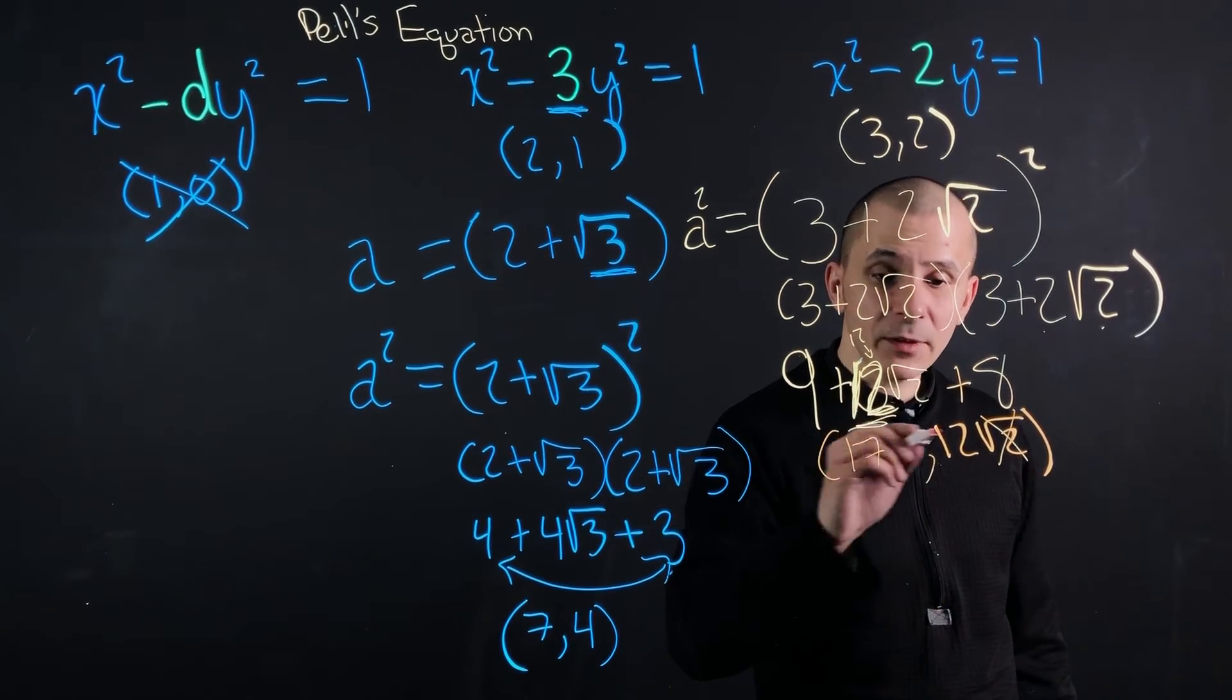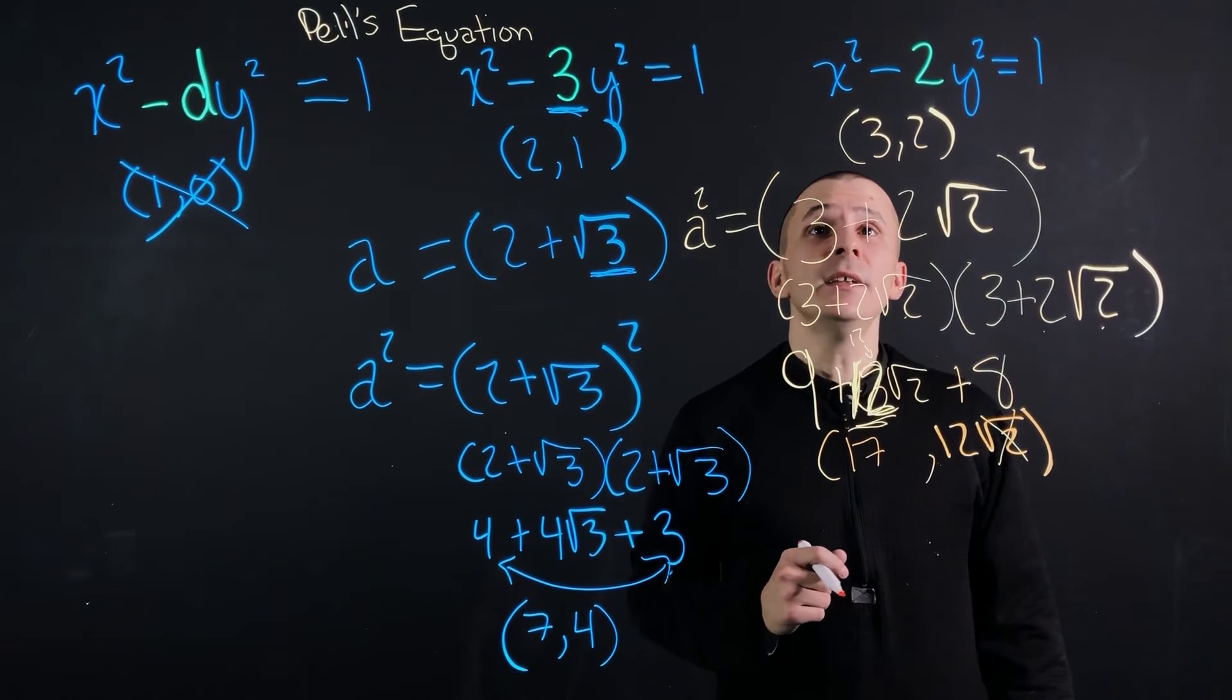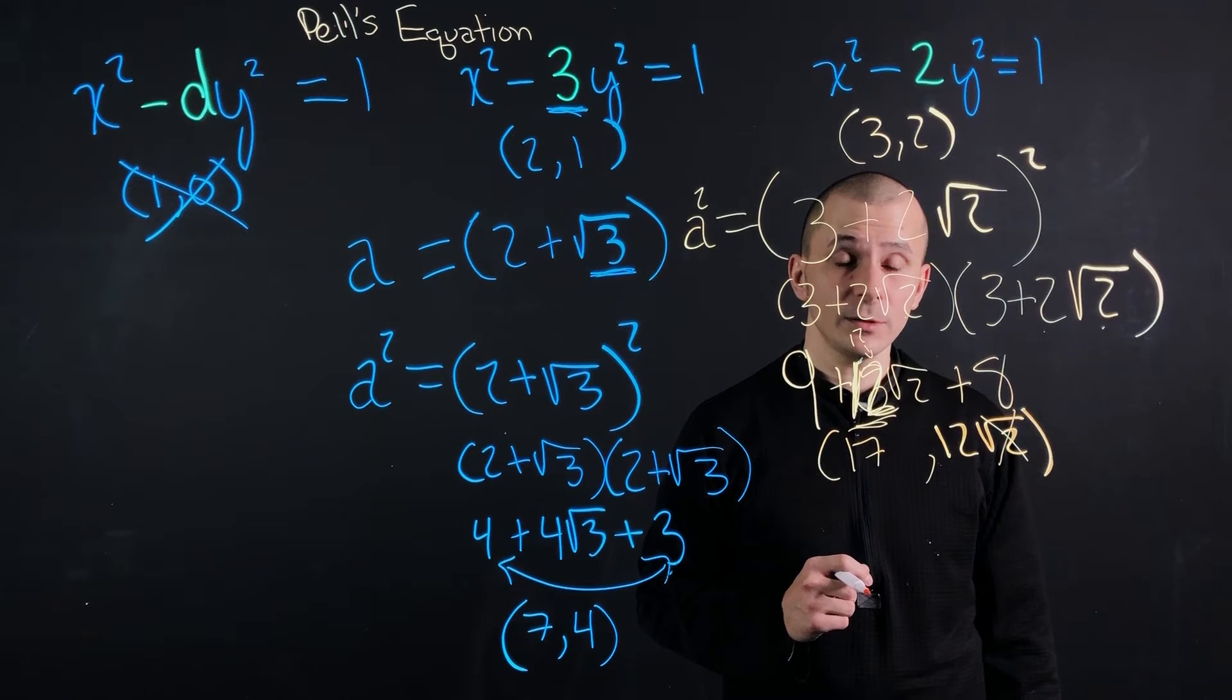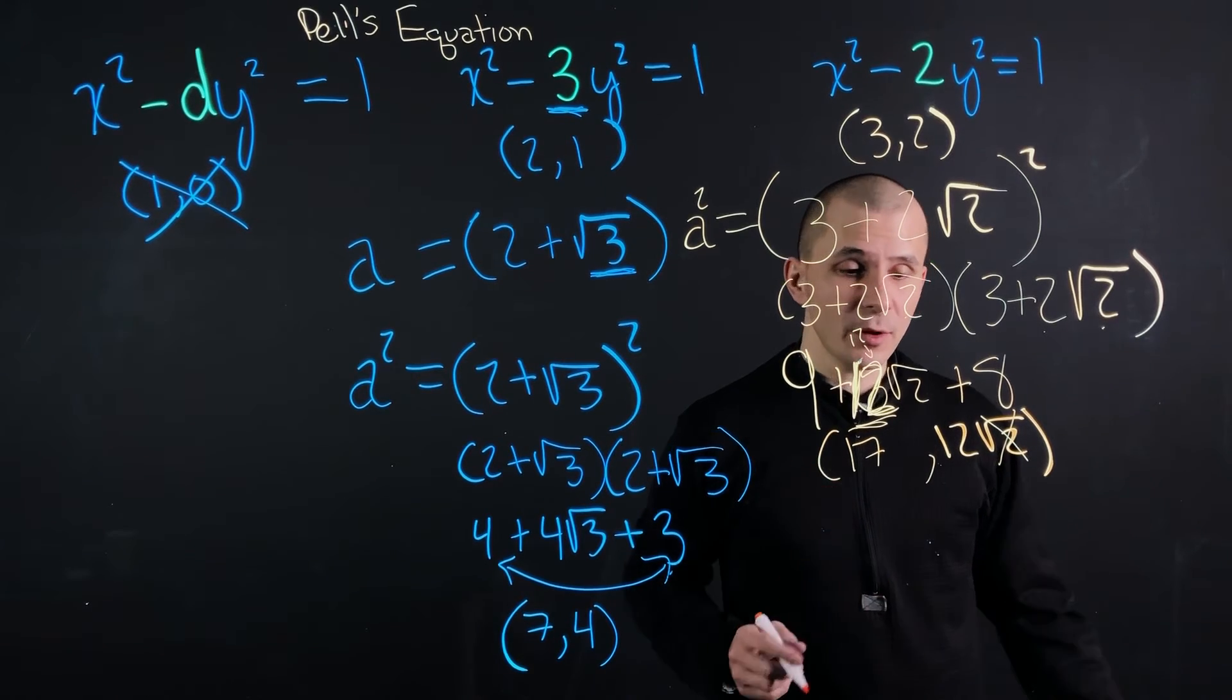All right. So 17 and 12 is the next sequence within x² - 2y² = 1. So what can we do about our cube?